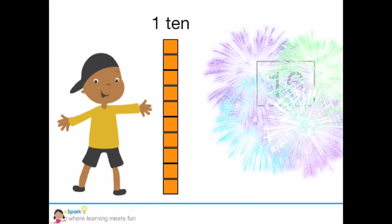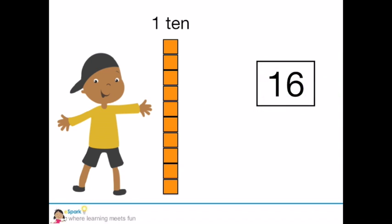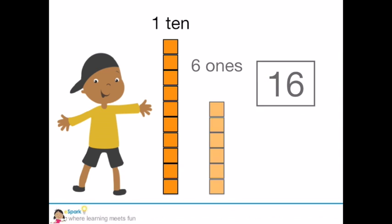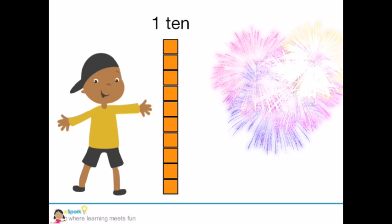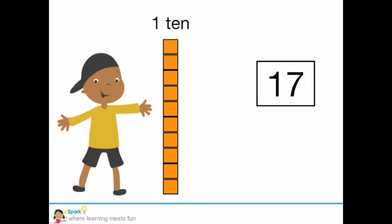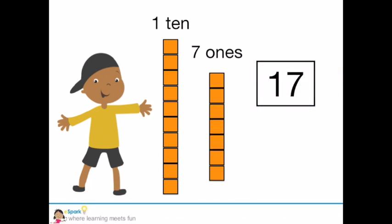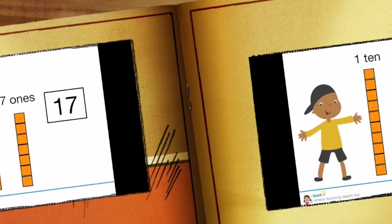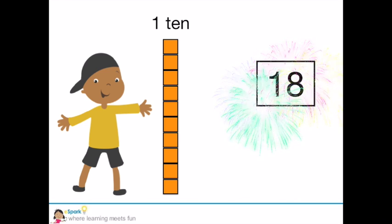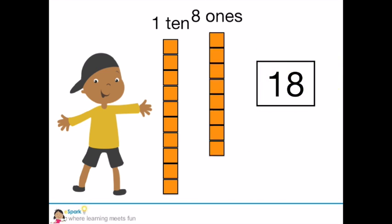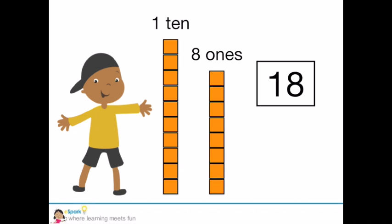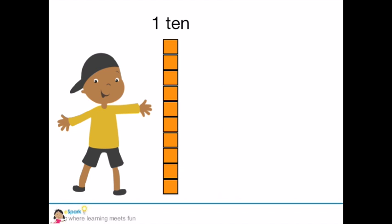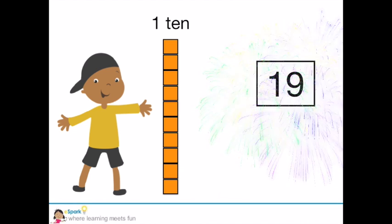16 is one group of 10 and 6 extra ones. 17 is one group of 10 and 7 extra ones. 18 is one group of 10 and 8 extra ones. 19 is one group of 10 and 9 extra ones.